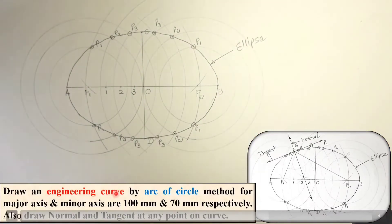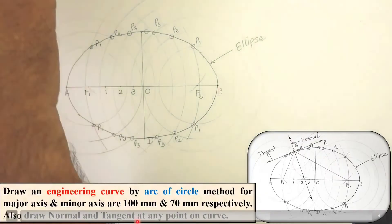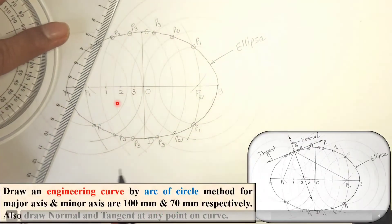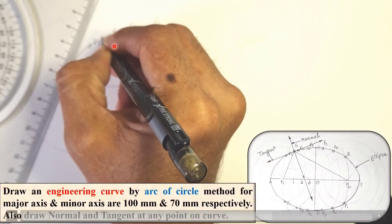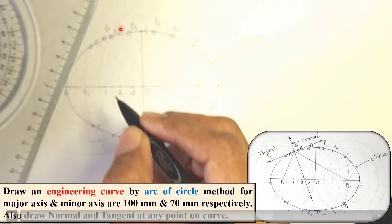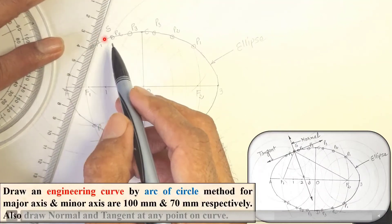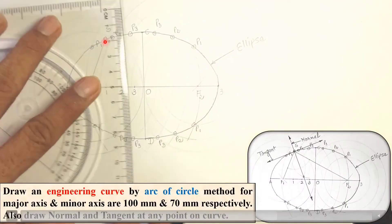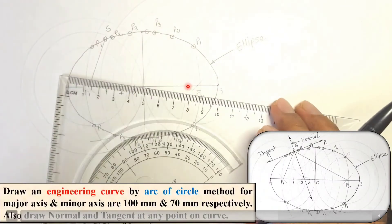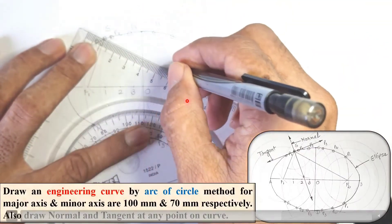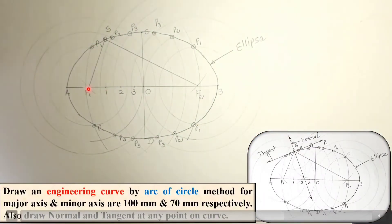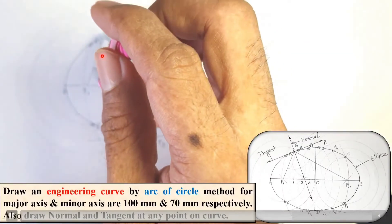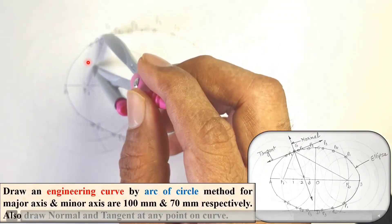Now for the second task — normal and tangent. First take any random point on the ellipse where you want to draw the normal and tangent; give it the name S. Join SF1 and then join SF2. Now draw the bisector of the angle F1SF2, which you can do with a protractor or a compass.